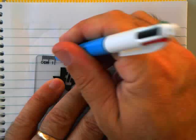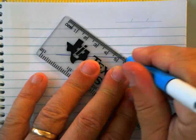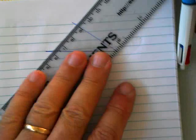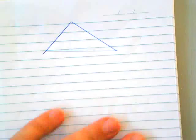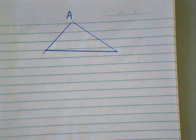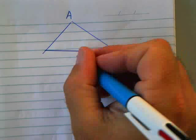In any triangle, just a random one. If I call this angle here, this corner, capital A, then the opposite side is called small a.